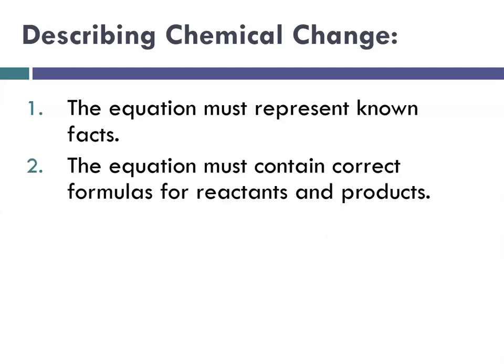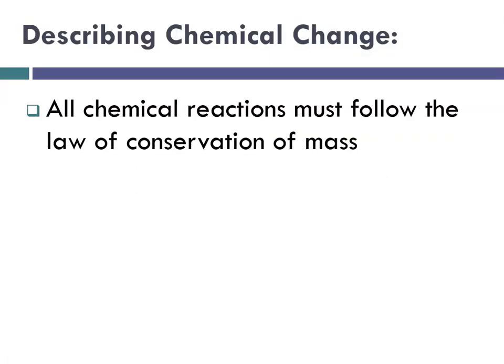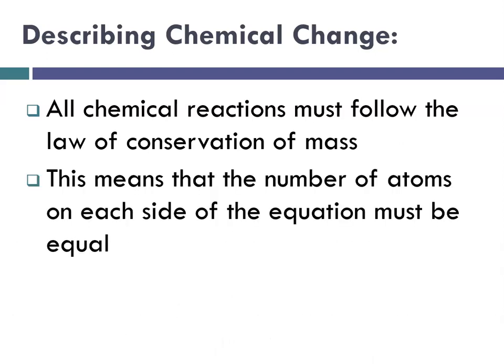How do we describe chemical change? The equation must represent known facts. The equation must contain the correct formulas for both the reactants and the products. And the law of conservation of mass must be satisfied. That means that matter doesn't pop in and out of existence. And so we have to use coefficients, numbers in front of the formulas, to balance the equations so that we can make sure that we are fulfilling the law of conservation of mass.